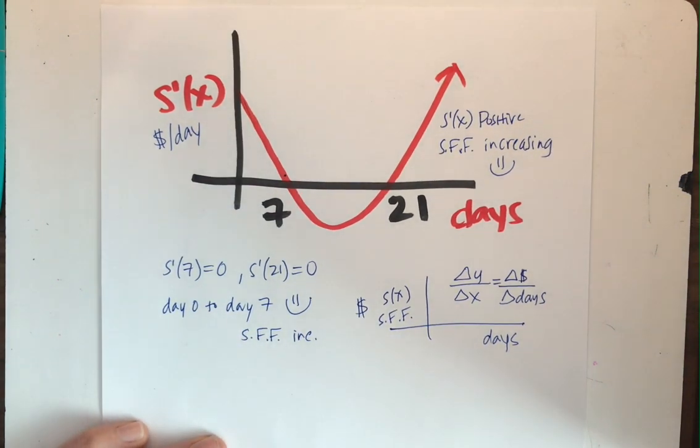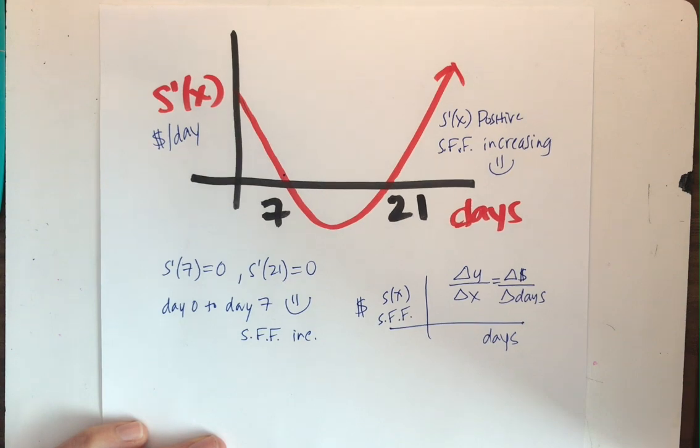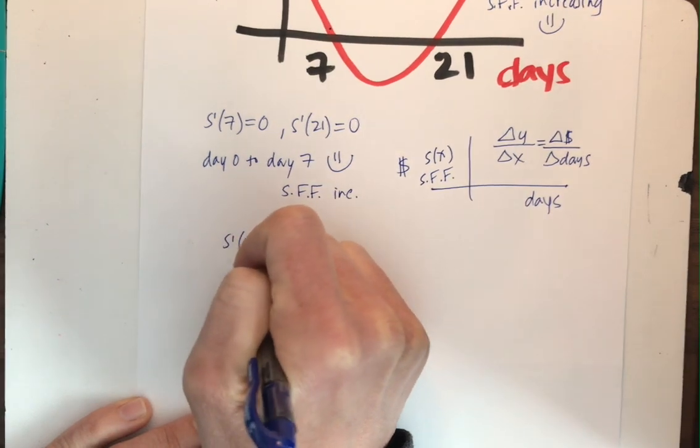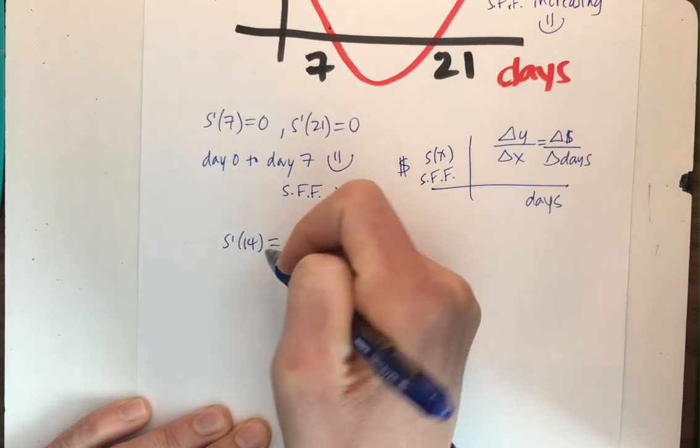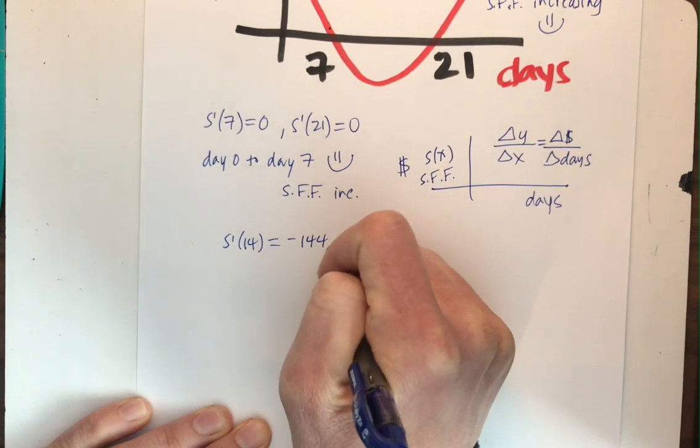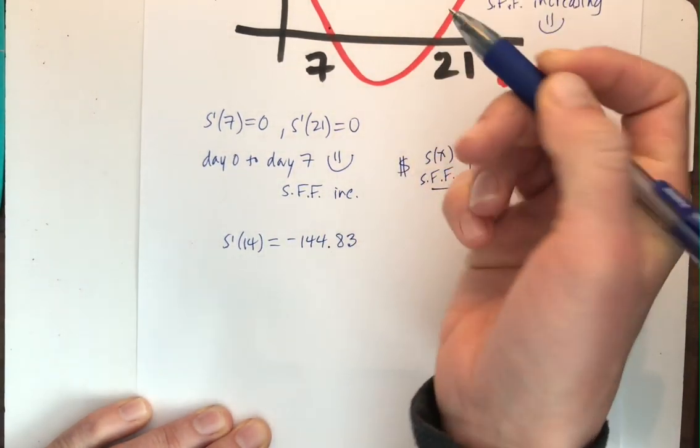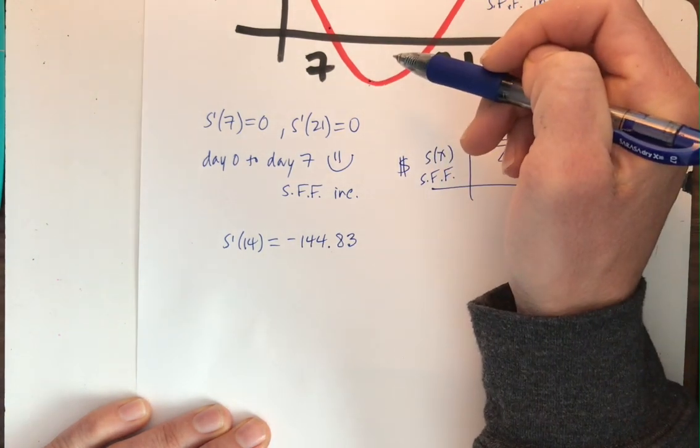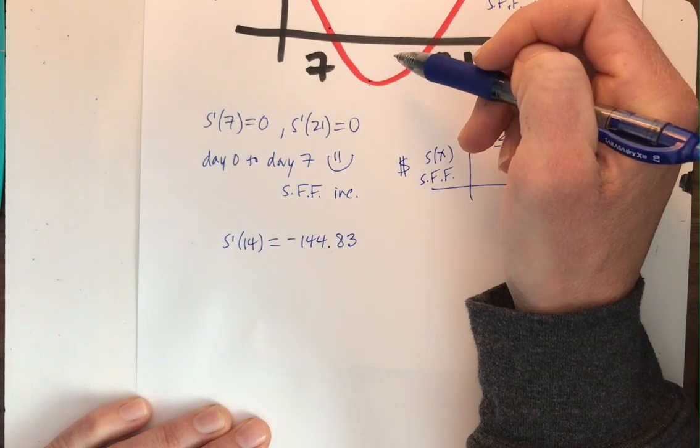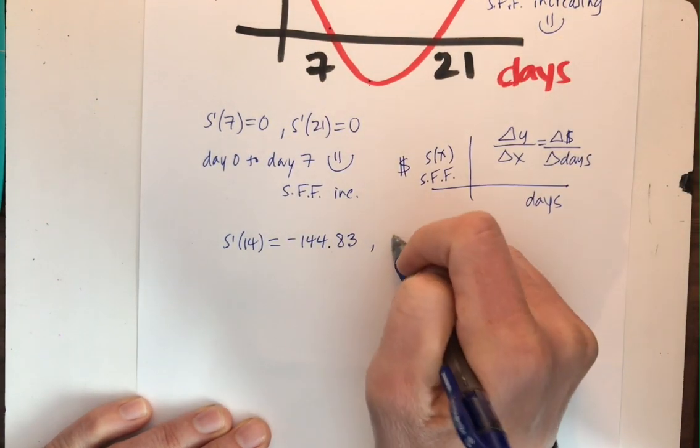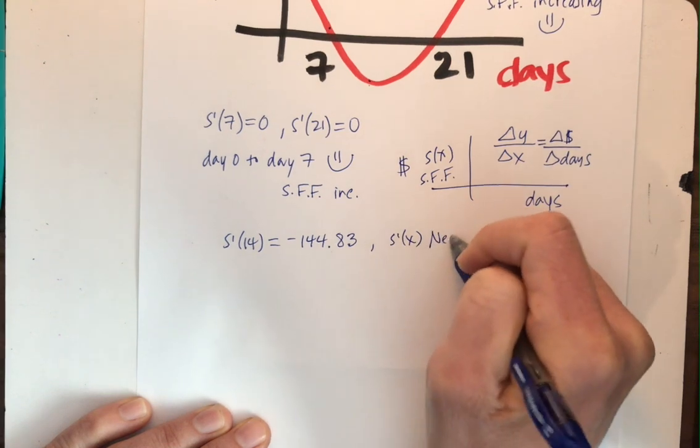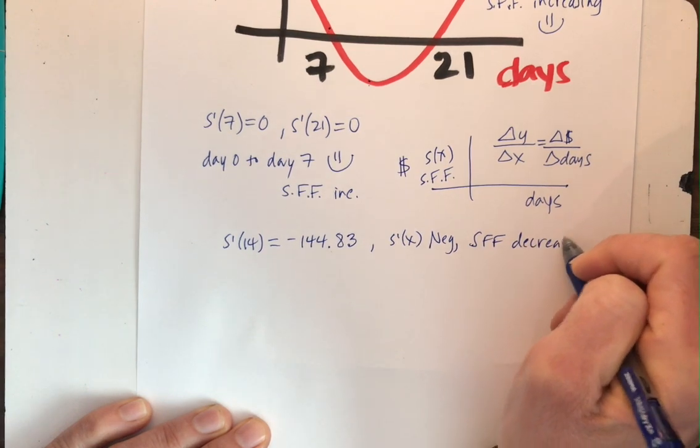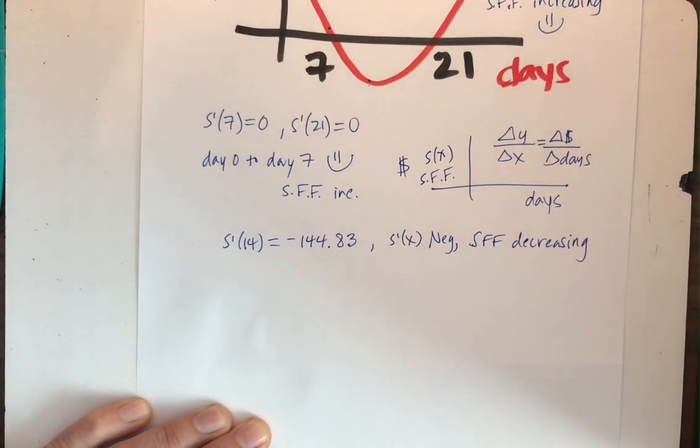All right, let's address some of the other questions on the sunflower sheet. Letter B, S prime of 14, and here I'm going to move this up a little bit. S prime of 14, the rate of change on the 14th day is negative 144.83. All right, so that makes sense, right? So the 14th day is somewhere like right around here. It's a negative value. What is happening to the Sarah Fisher fund on the 14th day? Well, if S prime is negative, S prime of X is negative, boo, that means the Sarah Fisher fund is decreasing. And no one's happy, right? Right.